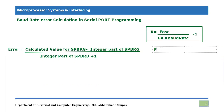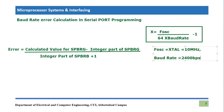Let's say we have a given FOSC, or crystal oscillator frequency, equal to 10 MHz, and we want to achieve with that specific crystal oscillator a baud rate of 2400 bits per second. If we evaluate the value by putting these two values in this formula, what will we have?